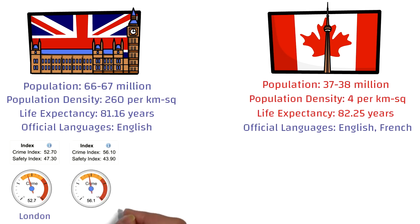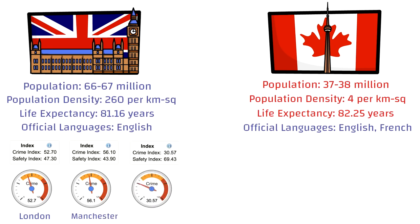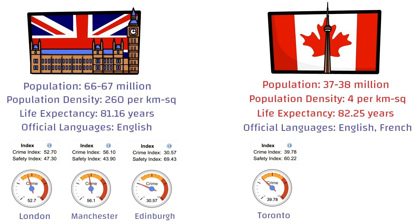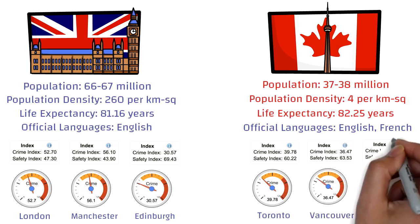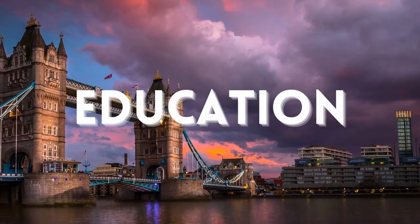Comparing with Canada: the crime index for Toronto is close to 40, for Vancouver it's close to 36, and for Montreal it's only 29 — making Montreal the safest of all six cities mentioned. Overall, comparing UK cities to Canadian cities, Canada appears to be much safer, at least based on these six cities.